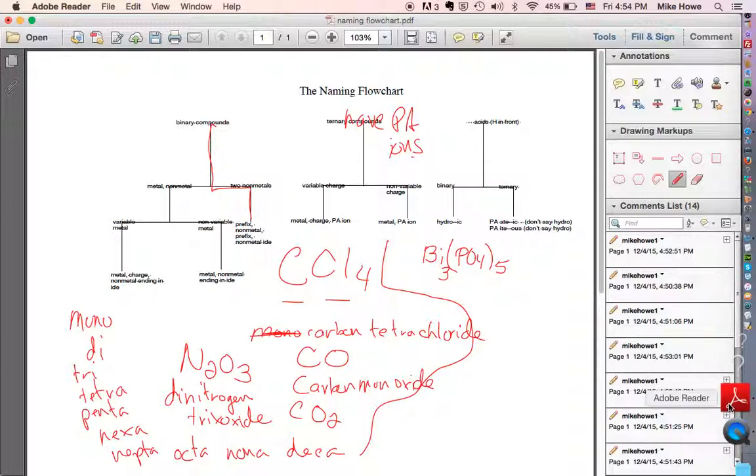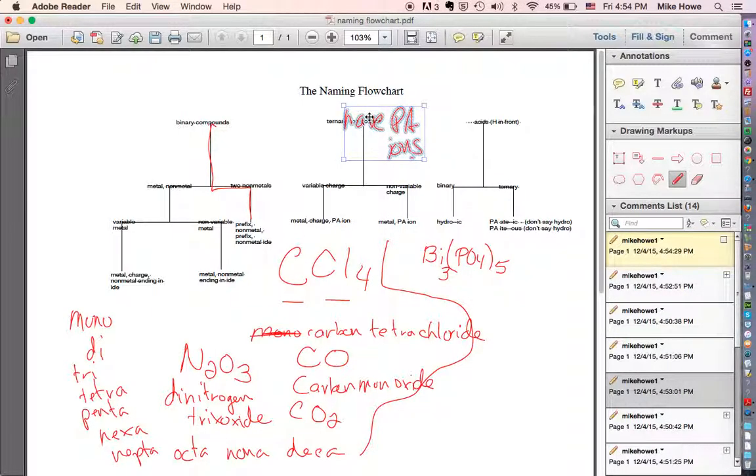So we've got to figure out which one it is. So once again, your ternary, since it's variable, since it's variable, you come down here. So you're going to come over here, variable charge. And then you're going to say the name of the metal and the charge on the metal and a polyatomic ion. So we went this way because bismuth was variable. It could be 3, it could be 5. So metal, the charge, and a polyatomic ion.